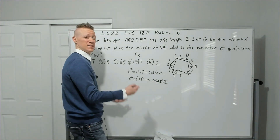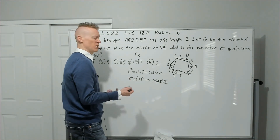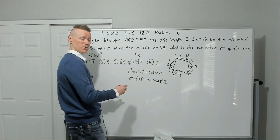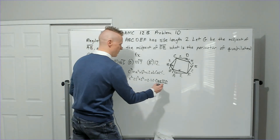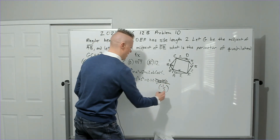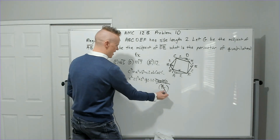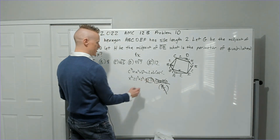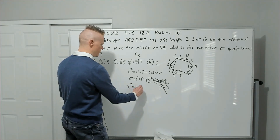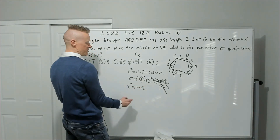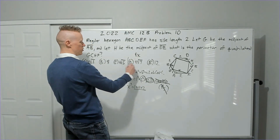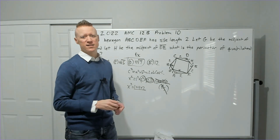So x² = 1² + 2² − 2(1)(2)cos(120°). cos(120°) = −1/2, so x² = 1 + 4 − 2(1)(2)(−1/2) = 1 + 4 + 2 = 7. Thus x = √7. The perimeter is 4x = 4√7.